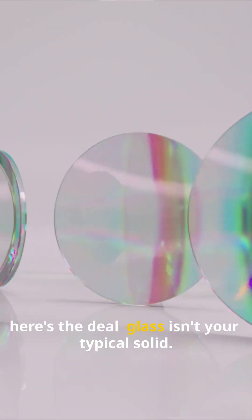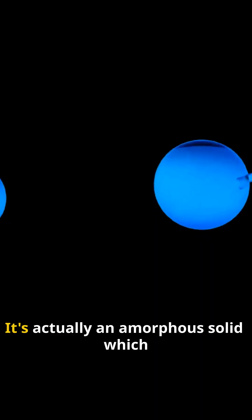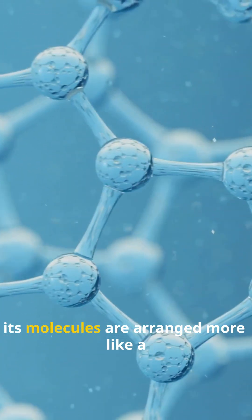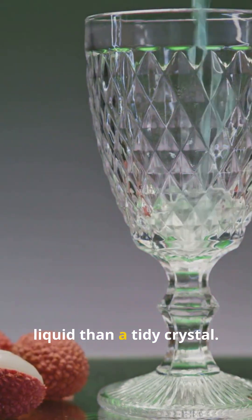So, here's the deal. Glass isn't your typical solid. It's actually an amorphous solid, which means it's rigid. But if you zoom in, its molecules are arranged more like a liquid than a tidy crystal.